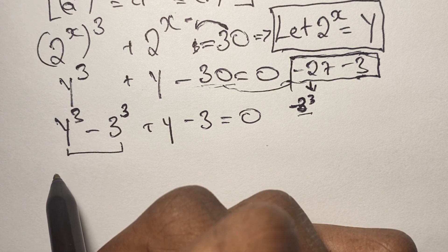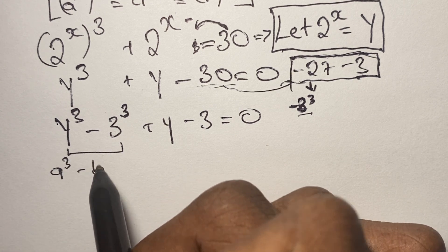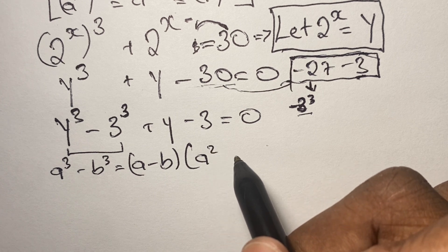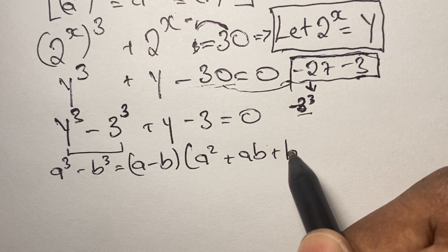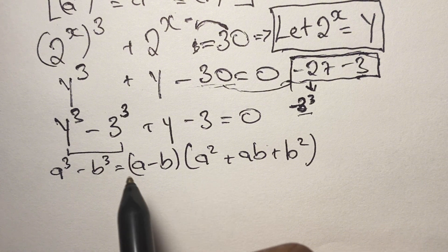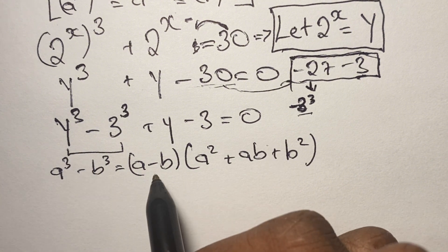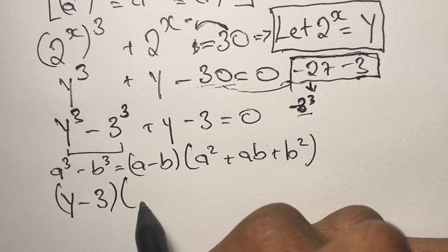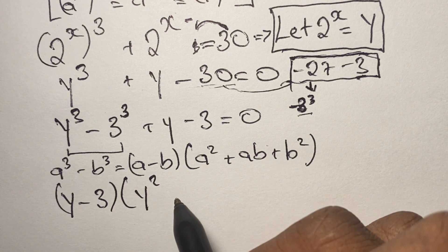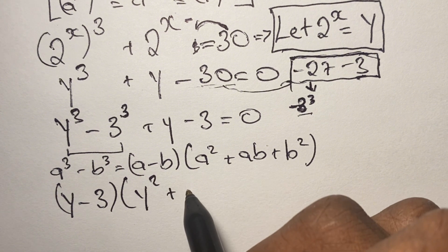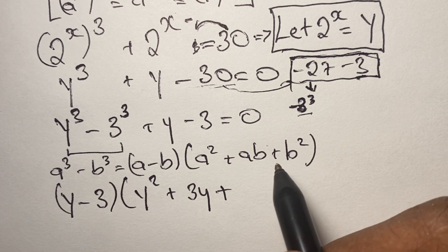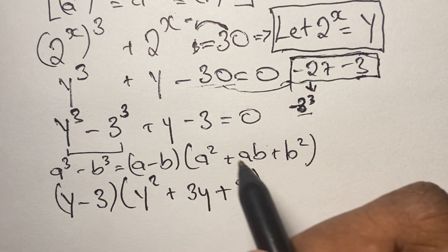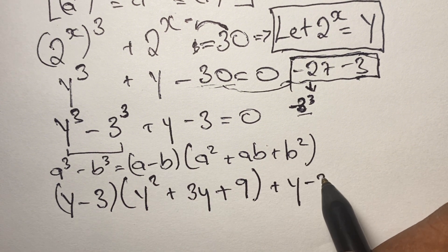We have a unique expression known as the difference of two cubes, where a cubed minus b cubed equals a minus b in one pair of brackets, and in the other pair we have a squared plus ab plus b squared. Using this to rewrite our equation: a minus b gives y minus 3 in the first bracket, and in the second bracket we have y squared plus 3y plus 9 — since a times b is 3y and b squared is 9.